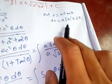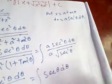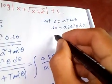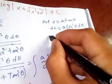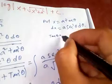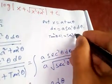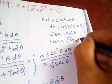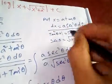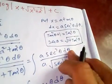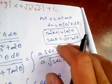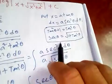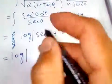Now we need to find sec θ in terms of x. We know that tan²θ plus 1 equals sec²θ, so sec θ equals square root of one plus tan²θ. Since we put x equal to a·tan θ, we have tan θ equals x over a. Now substituting, we want to express everything in terms of tan θ.